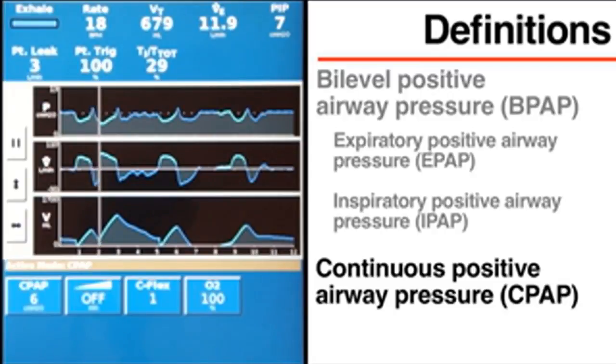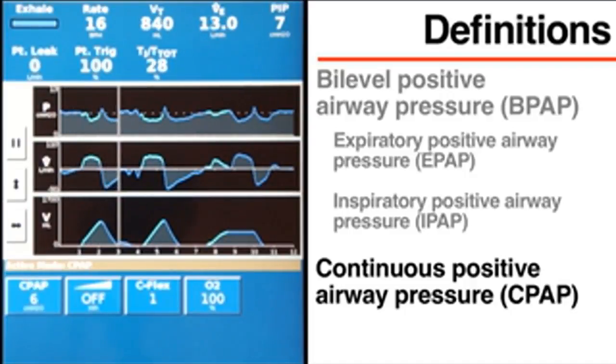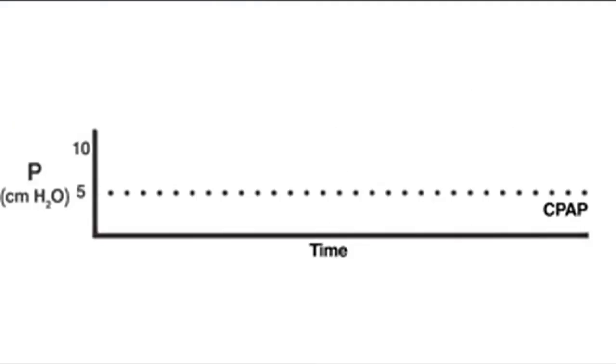CPAP is a spontaneous breathing mode that is distinct from BPAP. In CPAP, the ventilator delivers one pre-specified positive pressure throughout the respiratory cycle. It does not deliver additional inspiratory pressure, and therefore does not directly support ventilation. This graph shows airway pressure in a patient receiving CPAP.